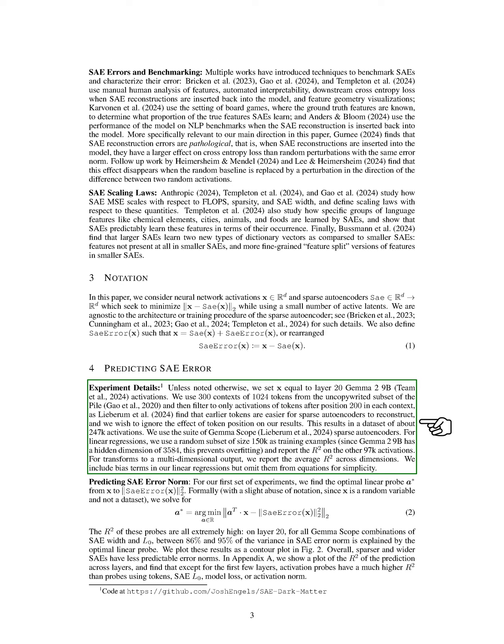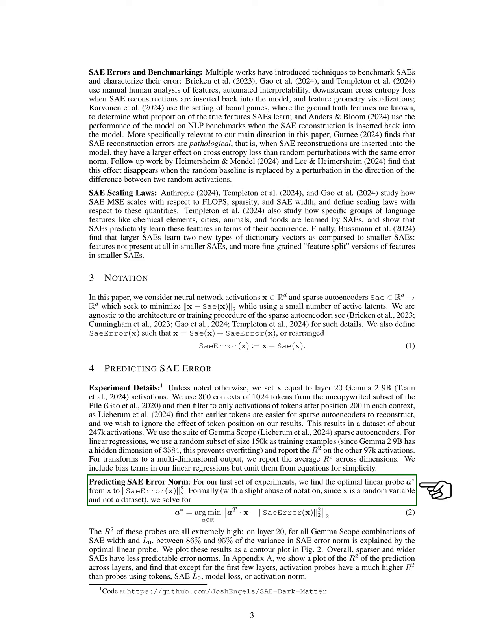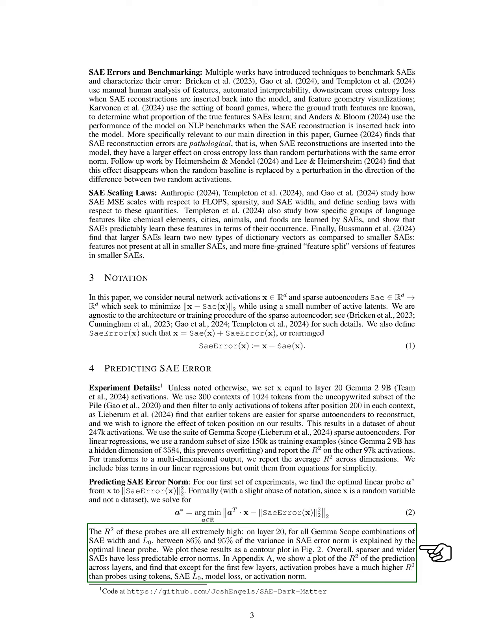We employ the Gemma Scope suite of sparse autoencoders. For our linear regression analyses, we randomly select 150,000 examples for training to prevent overfitting, given that the hidden dimension of Gemma 2 9b is 3584. We report the R-squared values on the remaining 97,000 activations, averaging across dimensions when transforming to a multi-dimensional output. We include bias terms in our regressions. In our first set of experiments, we determine the optimal linear probe connecting the activations to the squared norm of the SAE error, finding R-squared values ranging from 86% to 95% for layer 20 across various combinations of SAE width and sparsity level.